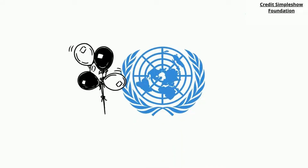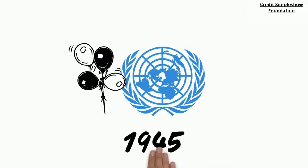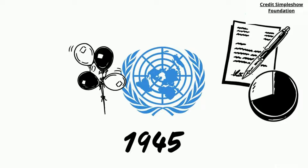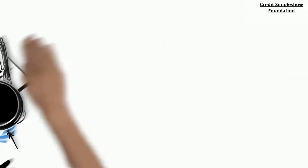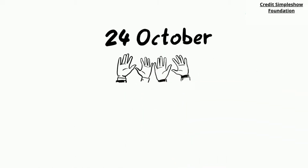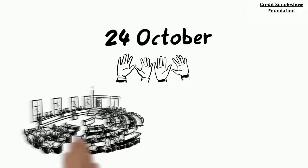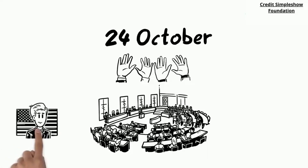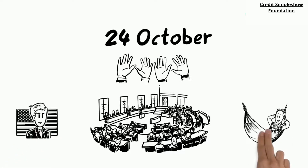UN Day marks the anniversary of the entry into force in 1945 of the UN Charter. With the ratification of this founding document by the majority of its signatories, including the five permanent members of the Security Council, the United Nations officially came into being. October 24th has been celebrated as United Nations Day since 1948. In 1971, the United Nations General Assembly recommended that the day be observed by member states as a public holiday.